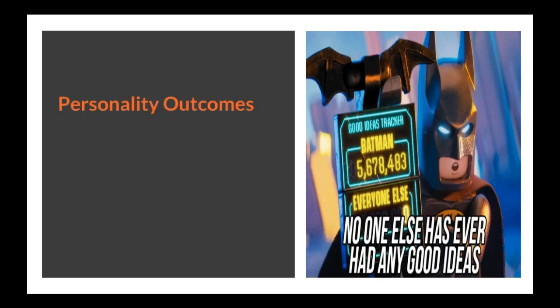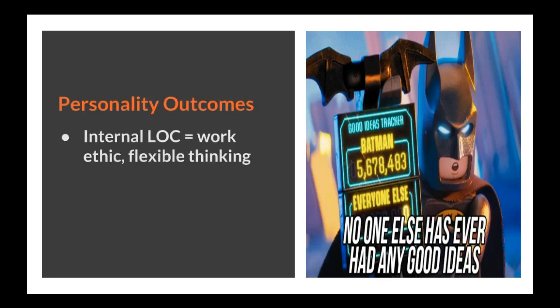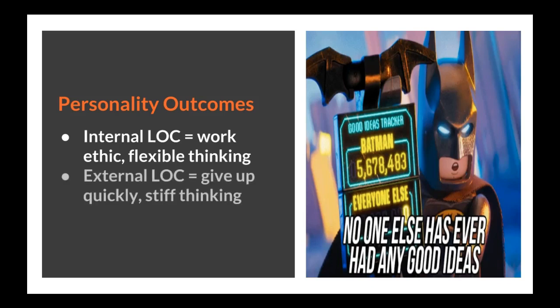When it comes to personality outcomes, individuals who tend to have an internal locus of control are more likely to have personality characteristics of high achievement motivation — the will to succeed in any attempted task. They also tend to develop strong work ethic and flexible thinking. On the other hand, individuals with an external locus of control are less likely to engage in helpful changes in behavior and have stiff thinking. They tend to give up too quickly and can fall into patterns of learned helplessness and depression. Lego Batman has a tendency to engage in stiff thinking and believes that no one else ever has good ideas besides him.